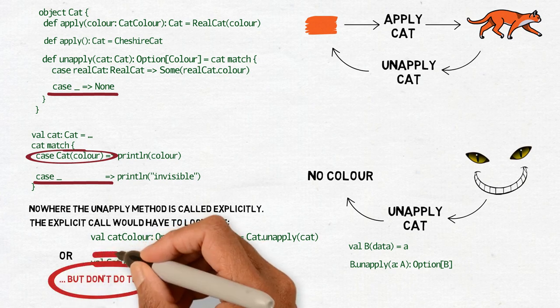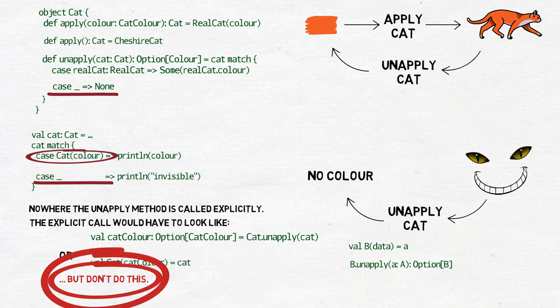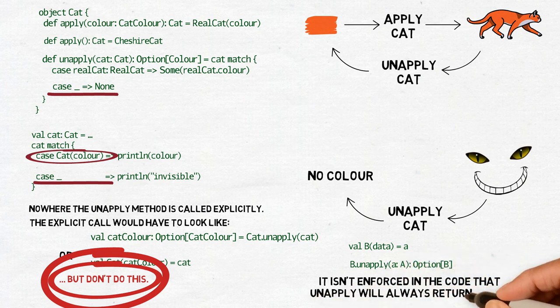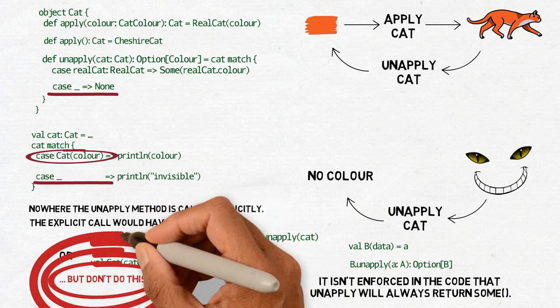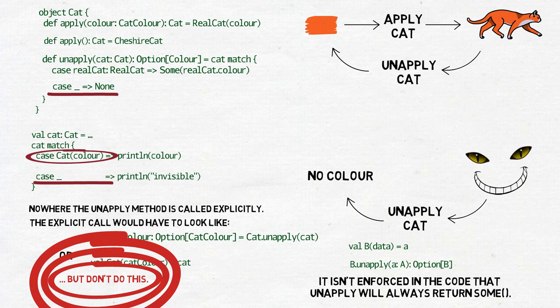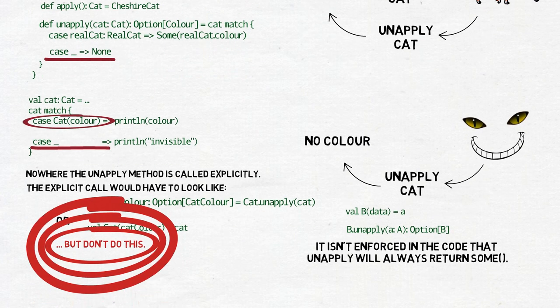But again, for readability purposes, it's better if it is. Please note that it's never enforced in the code that the unapply method will return some. It is possible that at some point in the future, someone unaware of this assumption will improve unapply by making it return none in some cases, and then we will have a bug.